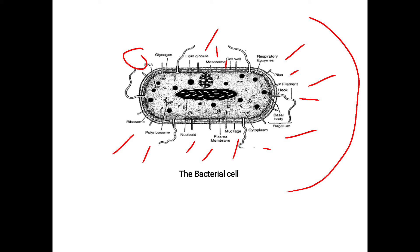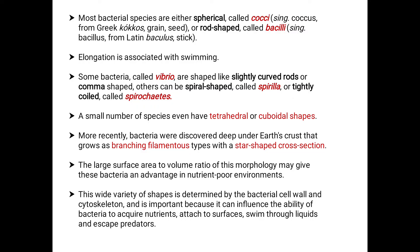Most bacterial species are either spherical, called cocci (singular: coccus) — from the Greek term meaning grain or seed — or rod-shaped, called bacilli (singular: bacillus), from the Latin word 'baculus' meaning stick. The elongation of rod-shaped bacteria is associated with swimming.